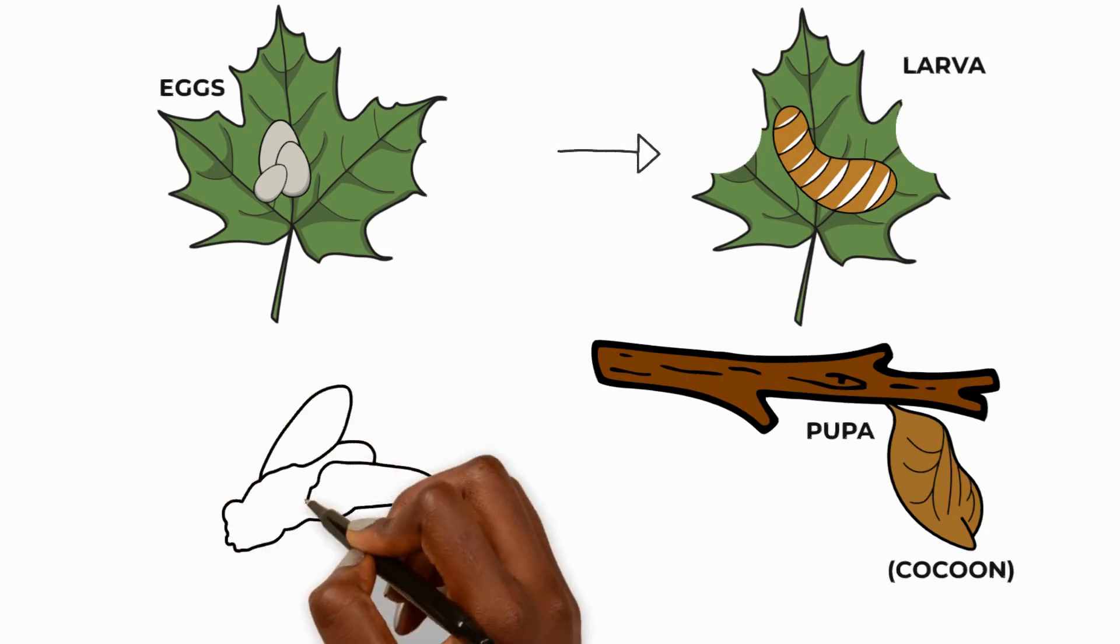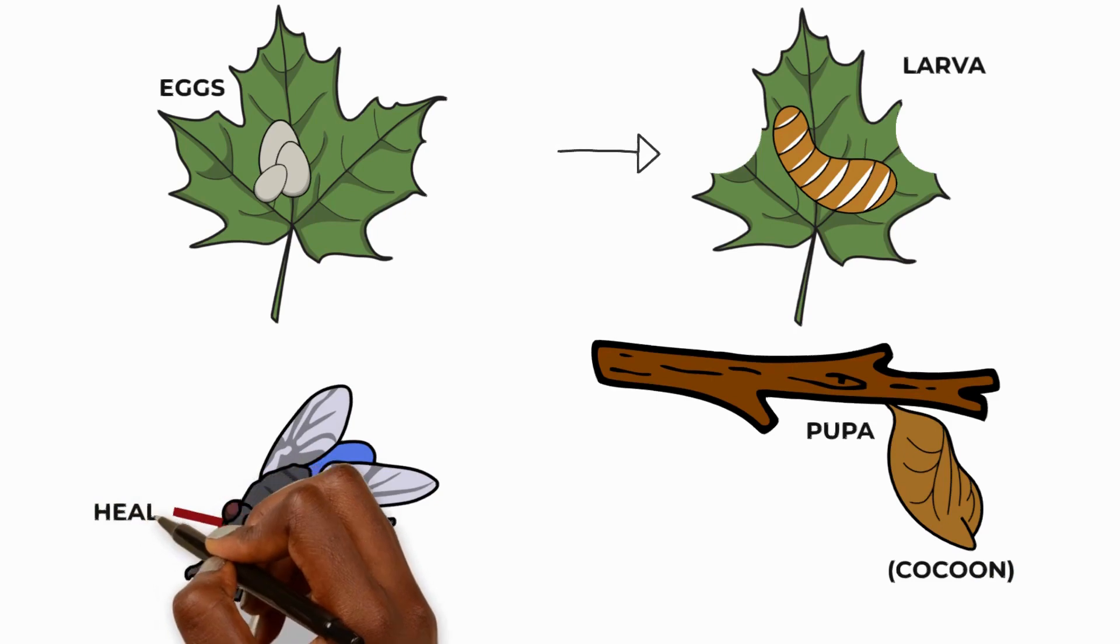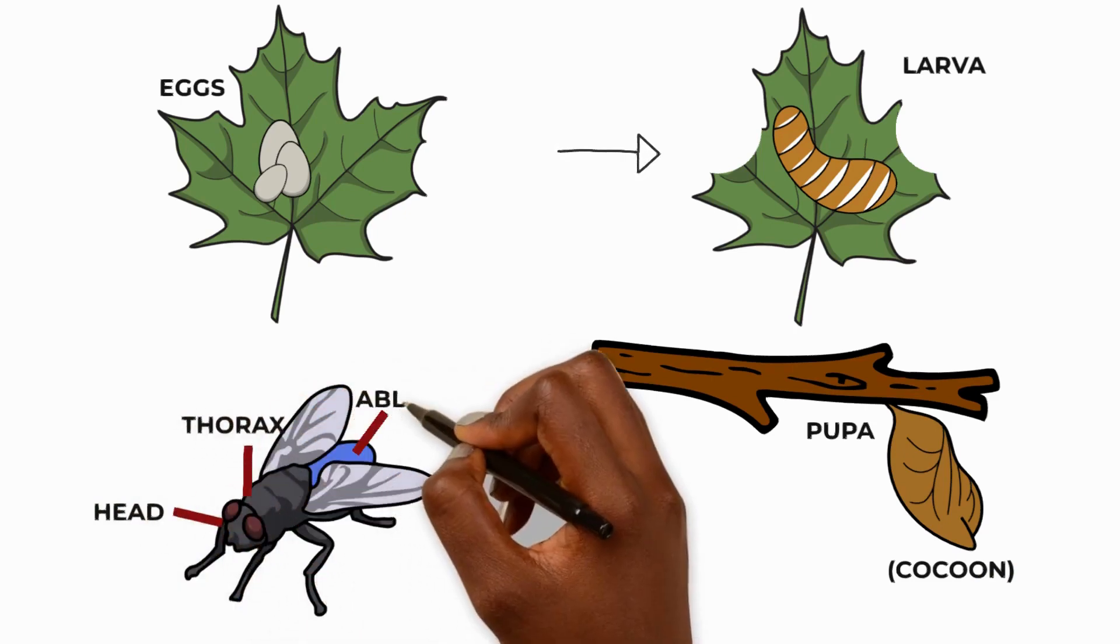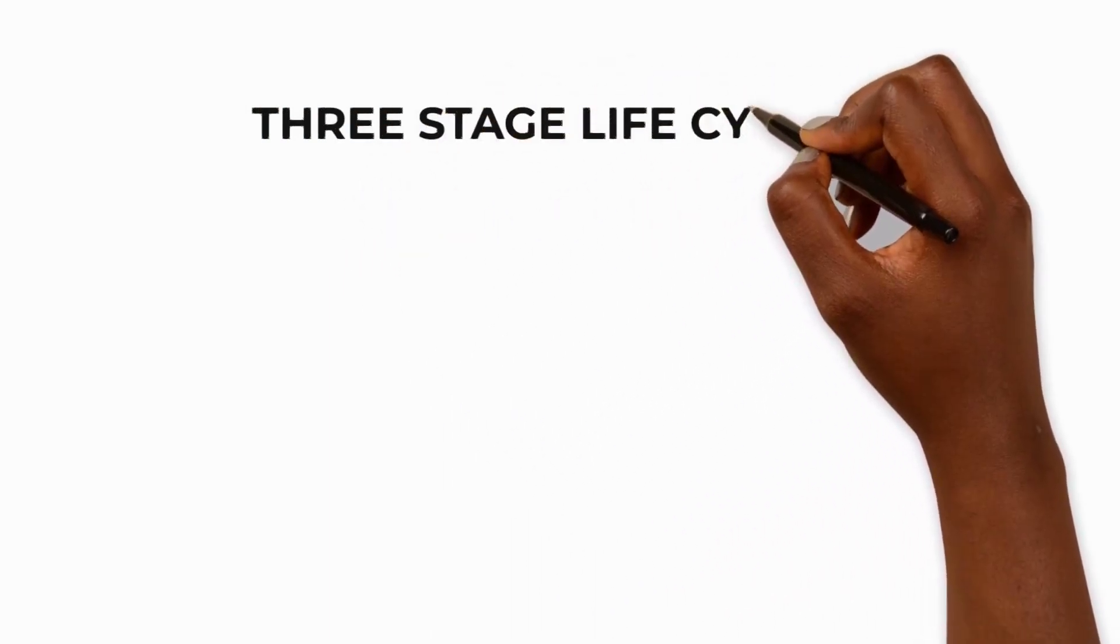Next, the pupa turns into an adult insect and emerges from the cocoon. Most insects now have wings and three body sections called a head, thorax and abdomen. Some insects like grasshoppers and cockroaches only have three stages to their life cycle.